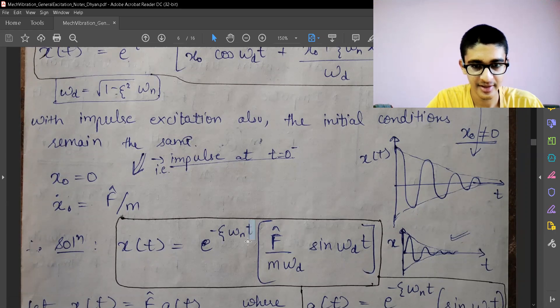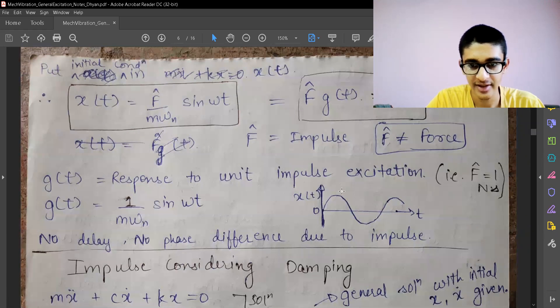The only change is we have an exponentially decaying term. This shows that the amplitude is going to decay exponentially, and this is how the solution or the response looks like. Earlier we had a response which was looking like a sine term.